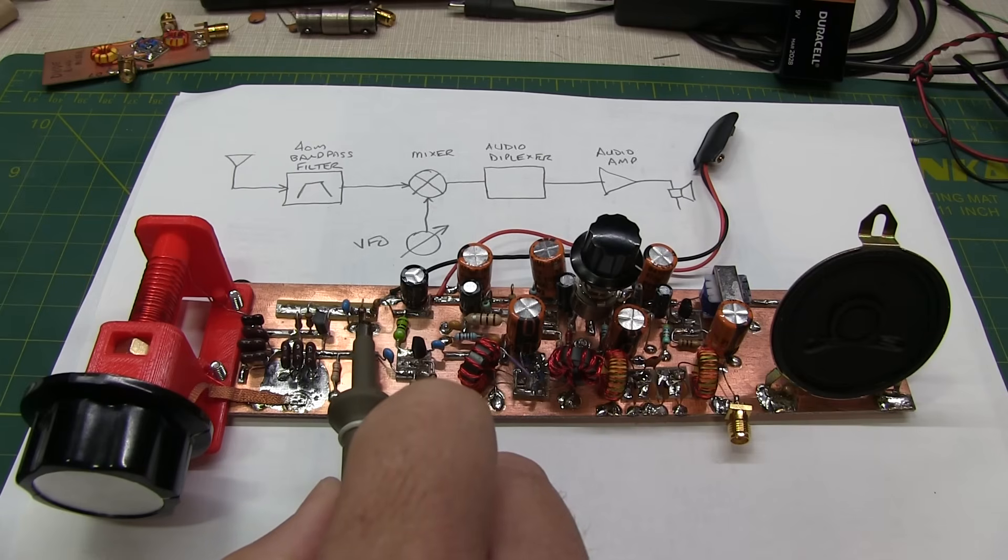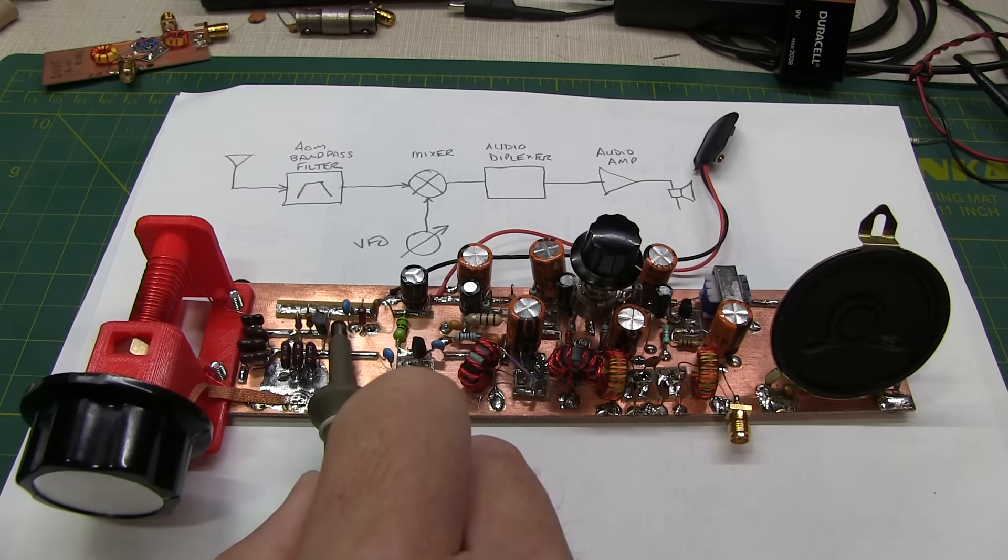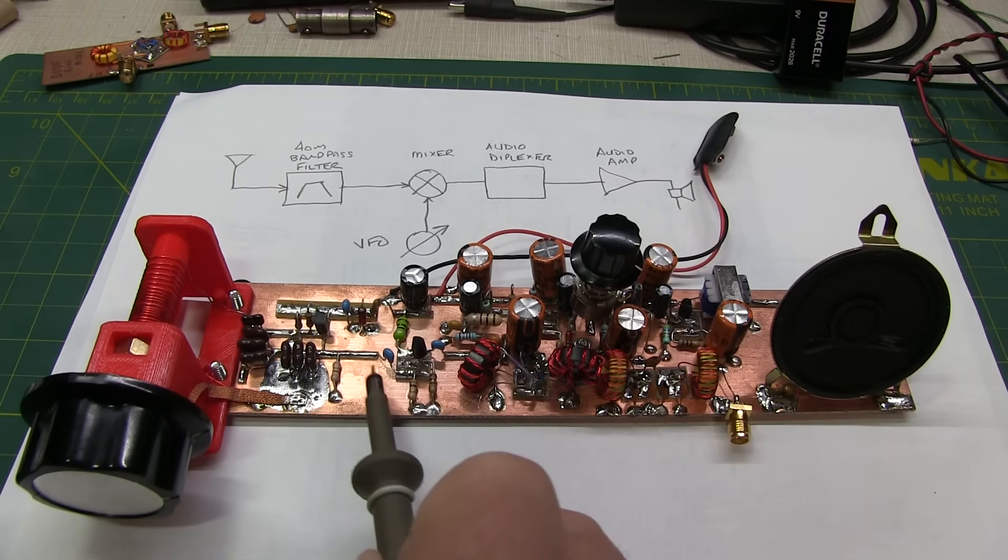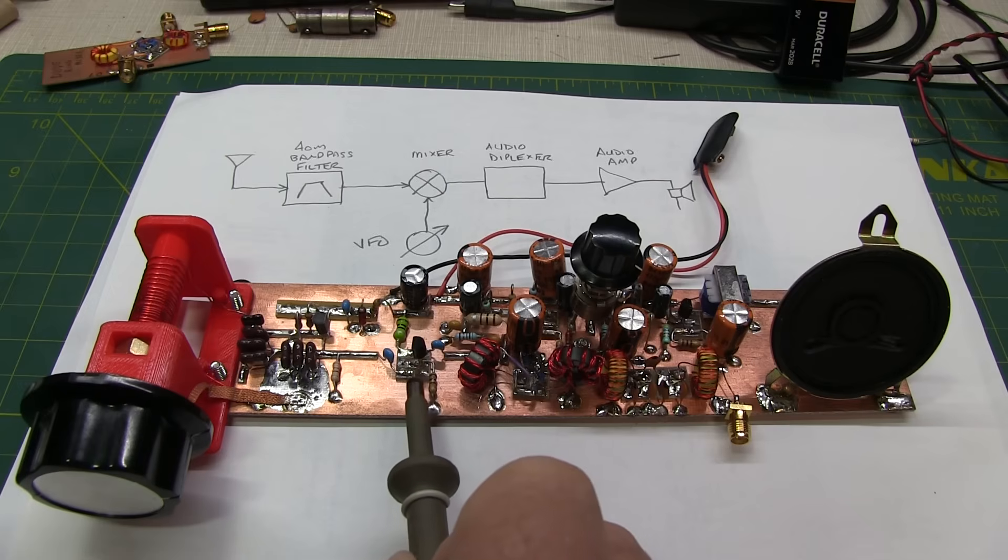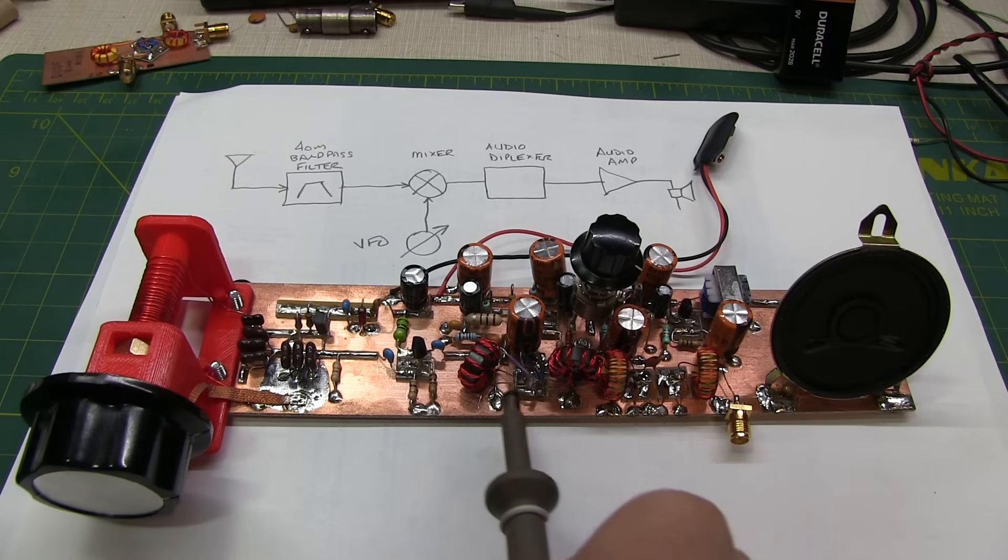There's a local Zener diode used here as a shunt regulator to give a nice stable supply to the oscillator core. And then that's coupled into a JFET buffer, which then drives through this capacitor into the diode ring mixer, which is right here.